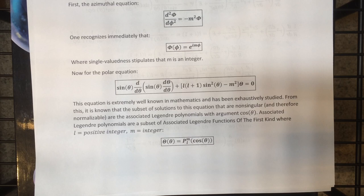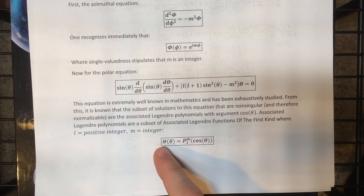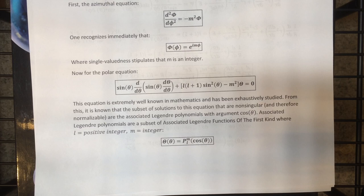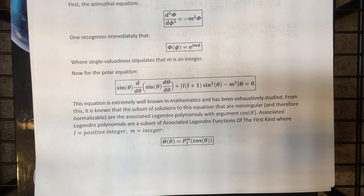The normalizable solutions are the associated Legendre polynomials of cosine theta. This equation has two linearly independent sets of solutions: the first-kind and second-kind associated Legendre functions. But the second kind has logarithms in it that cause logarithmic singularities, which threaten normalizability and as a result have to be thrown out entirely. The subset of the first-kind associated Legendre functions that work turn out to be specifically the associated Legendre polynomials.